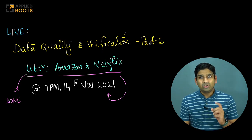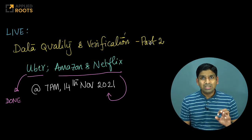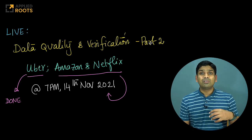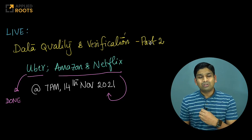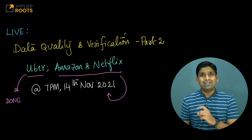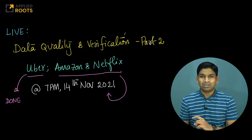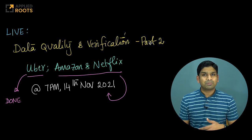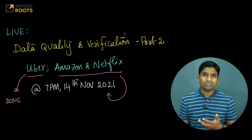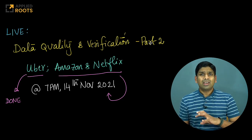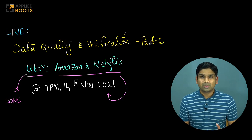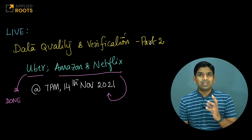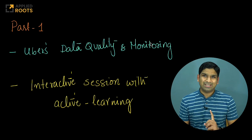In this week, we will continue on what we have built and learned earlier. We will discuss the systems that Amazon and Netflix have built — Netflix specifically for their personalization team, and Amazon as a general tool for data quality across various teams. So this is literally a part two of the previous session itself.